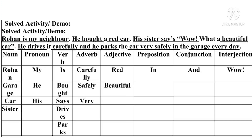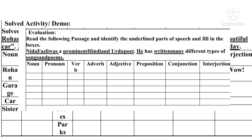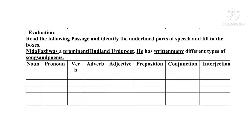Adjectives are: red, beautiful. Preposition is: in. Conjunction is: and. And last one, interjection is: wow. In this way, we can classify the underlined words in the proper column.